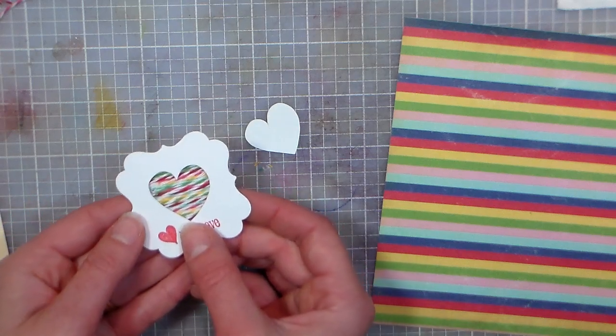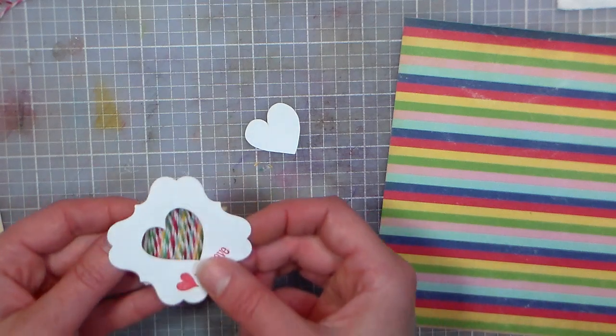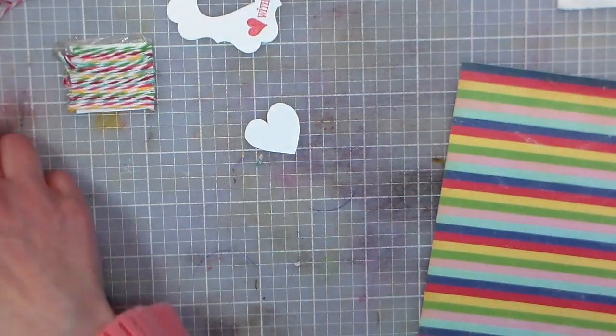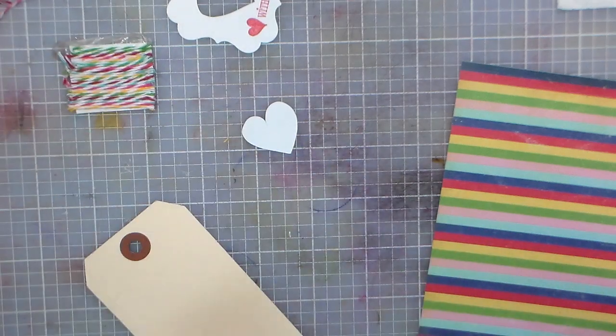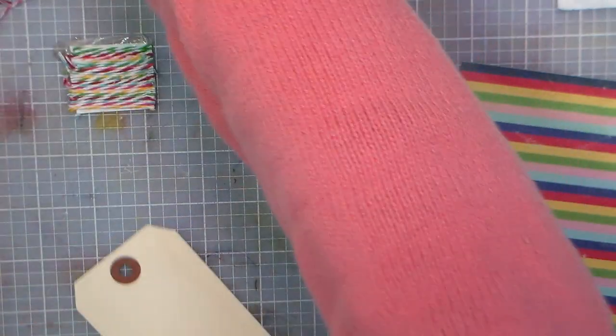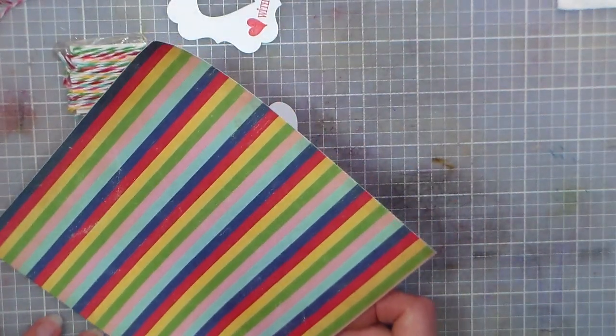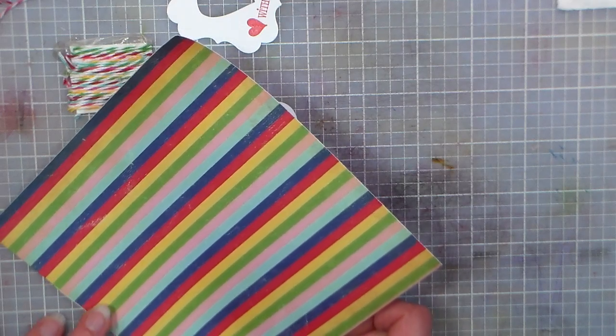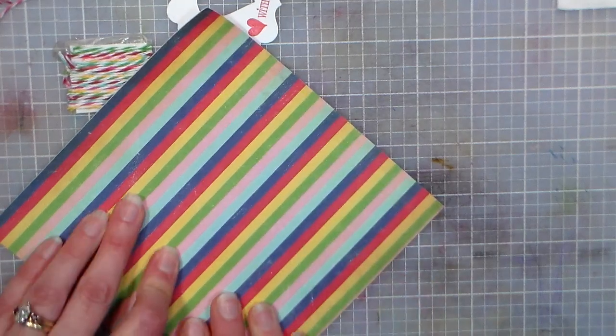Now this is gonna go on top, but first I want to prepare a tag for it. Isn't that cute? You can even tip it to the side if you like that better—it's completely up to you. I'm adhering my patterned paper to this tag, then I'll trim it out.